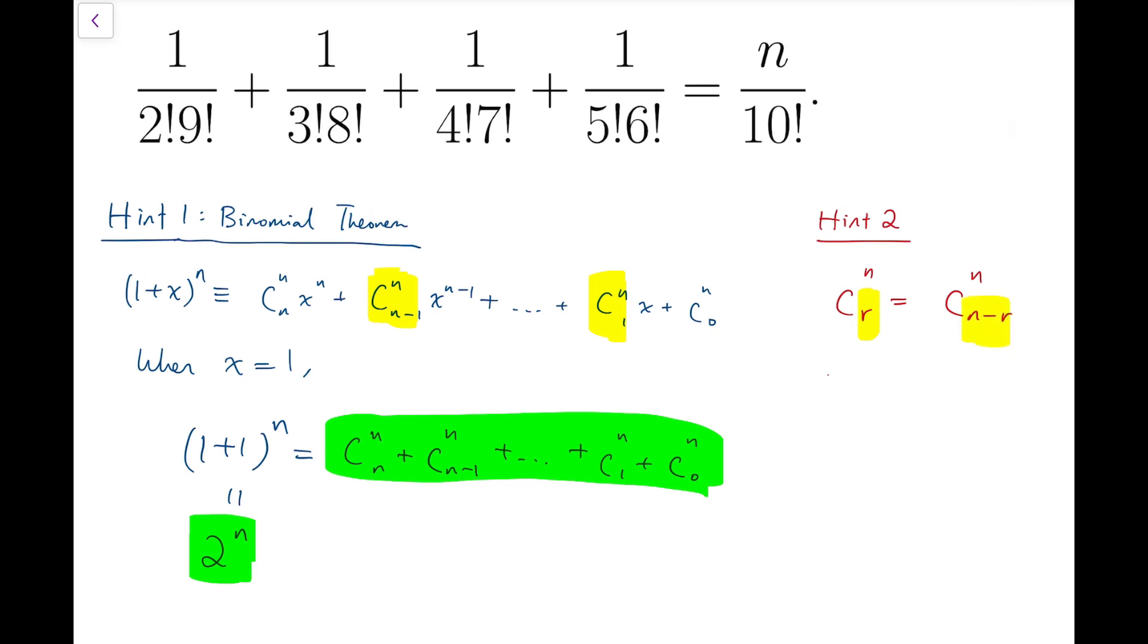For example, the number of ways to choose 6 objects from 10, which is 10 choose 6, is exactly the same as picking 4 of them and declaring them to be the items that we do not choose, which means it's equal to 10 choose 4. So these are the two tools that we are going to use to solve this equation.